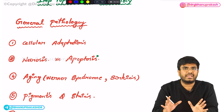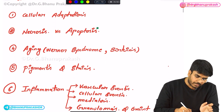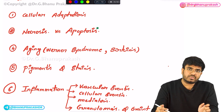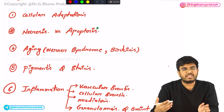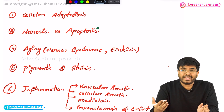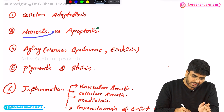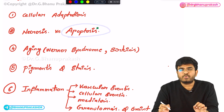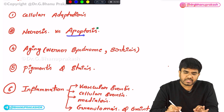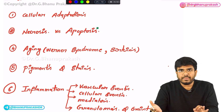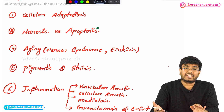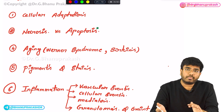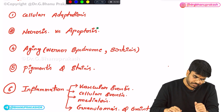Next in general pathology, know about necrosis and apoptosis. Know about different types of necrosis: coagulative necrosis, liquefactive necrosis, fat necrosis, dry gangrene, wet gangrene. Apoptosis is most important compared to necrosis. In apoptosis, you have to know about the intrinsic pathway, the different types of caspases involved in the extrinsic pathway, and caspases involved in the intrinsic pathway.